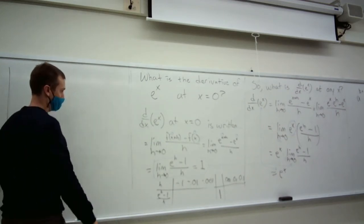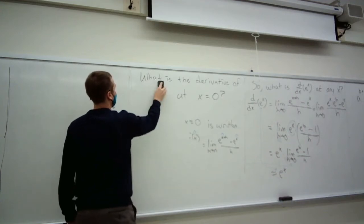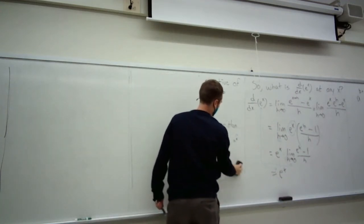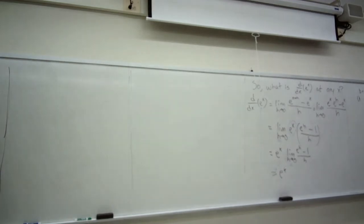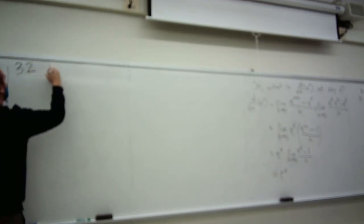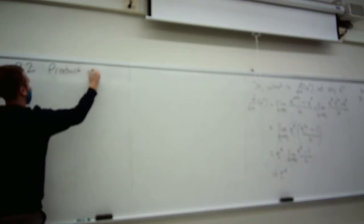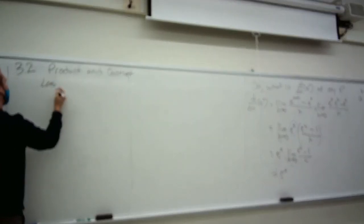In summary, we can now take the derivative of the natural exponential e^X and any polynomial using these patterns. The catalog of functions for which we have rules is still quite small, so now we'll introduce ways to find rules for more functions. This is section 3.2: product and quotient laws for derivatives.